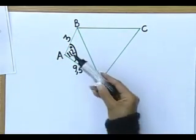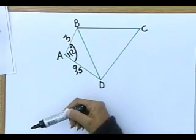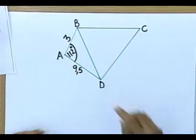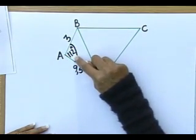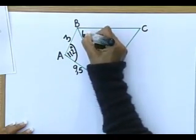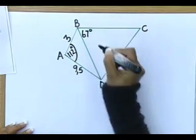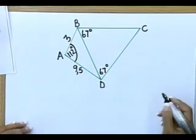And this angle here is 112 degrees. Now, tell me quickly, is this 112 an included angle? Absolutely. Because you have your three, you have your 9.5 and that angle there is 112 degrees. And then they told me that this angle is 67 degrees and they also said that this angle here is 67 degrees.